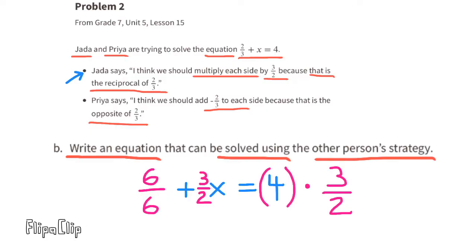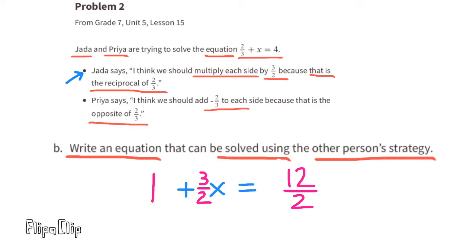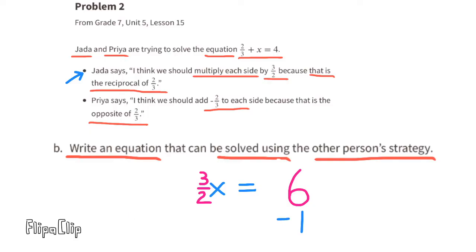Six sixths, or six divided by six, equals one. So on the left we have one plus three halves times x. On the right, four times three halves equals four over one times three over two, which equals twelve over two, which equals six. So we now have one plus three halves times x equals six. We still need to subtract one from both sides, leaving three halves times x equals five.